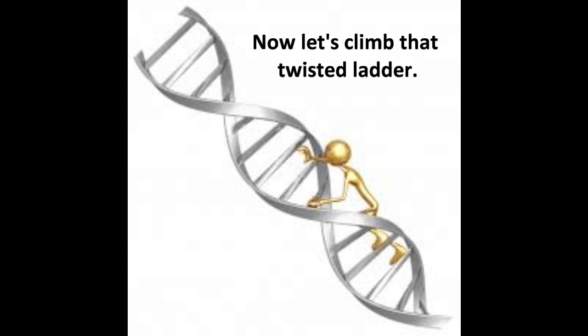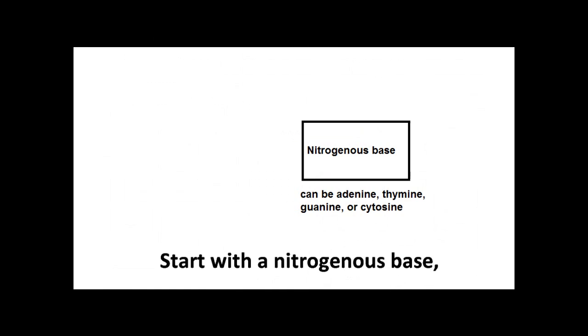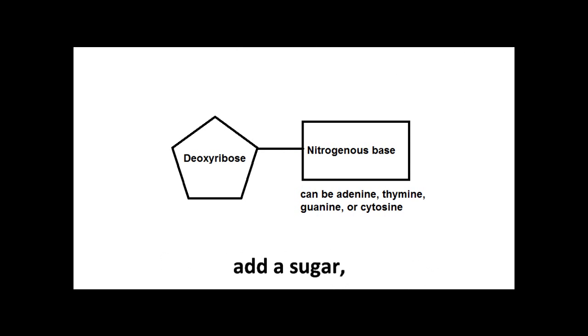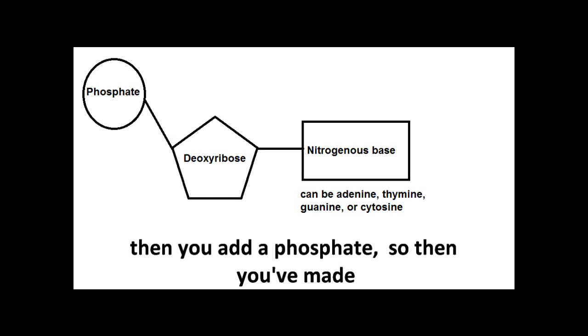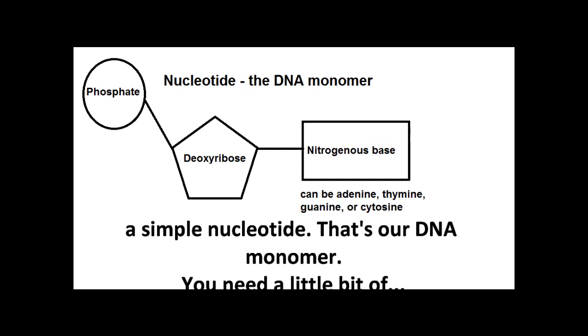Now let's climb that twisted ladder. Start with a nitrogenous base. Add a sugar. Then you add a phosphate. So then you've made a simple nucleotide. That's our DNA monomer.